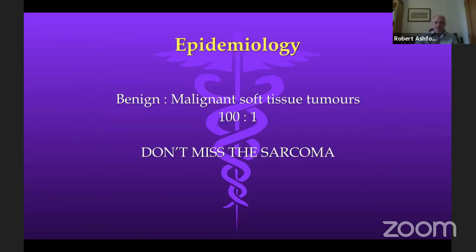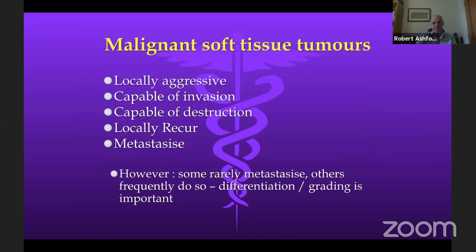With soft tissue sarcomas, the problem is that they're a hundred times less common than benign tumors. The approach must be: don't miss the sarcoma. If you regard everything as benign you're going to run into trouble. Malignant soft tissue sarcomas are locally aggressive, capable of invasion and destruction, locally recurring, and able to metastasize. However, they're a very heterogeneous group — some rarely metastasize, some do so readily. Differentiation and grading are important. Increasingly, the biology of individual subtypes histologically is what matters.